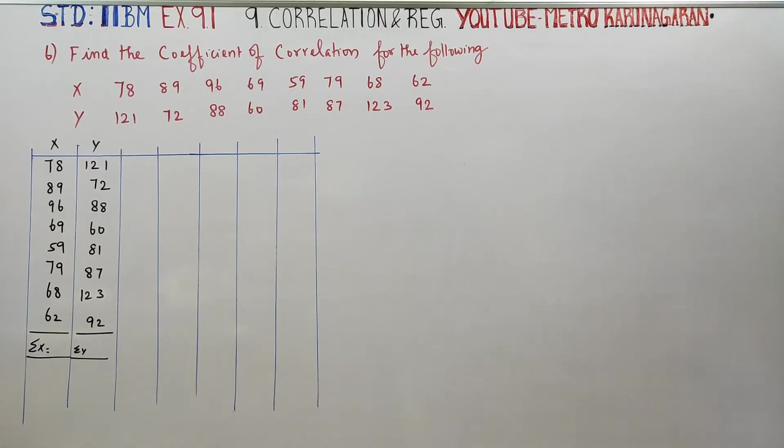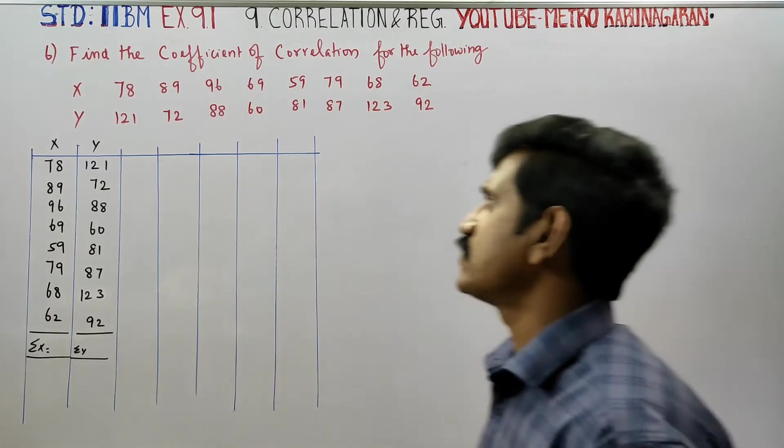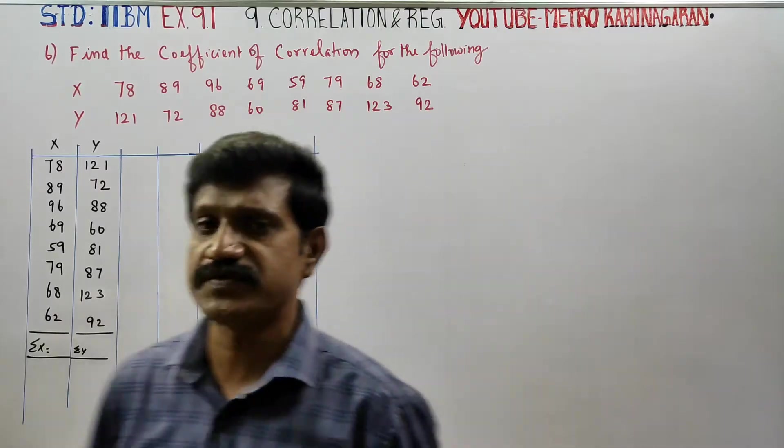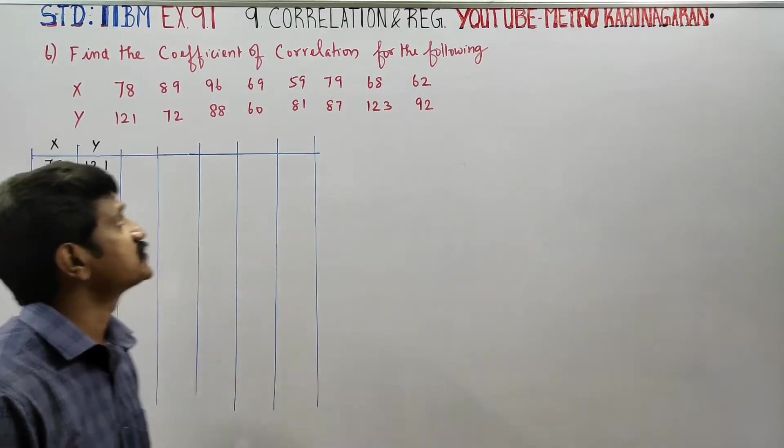Dear 11th Standard Business Mathematics students, in Exercise 9.1, Sum No. 6, you have to find the coefficient of correlation.